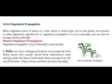When vegetative parts of plants — roots, stems, or leaves — give rise to new plants, the process is called vegetative reproduction or vegetative propagation. This means when vegetative parts of plants such as roots, stems, and leaves generate new plants, this method is called vegetative reproduction or vegetative propagation.